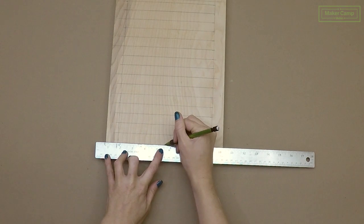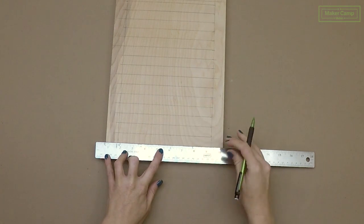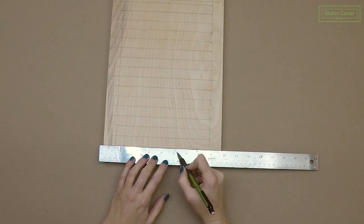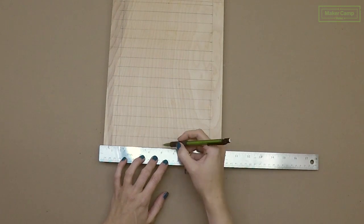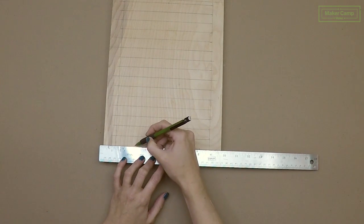Next when we make our vertical lines we want to start from the center of the board so that we have evenly spaced nails out to the sides. So first mark the center and then work your way out using the same three quarters of an inch measurement.